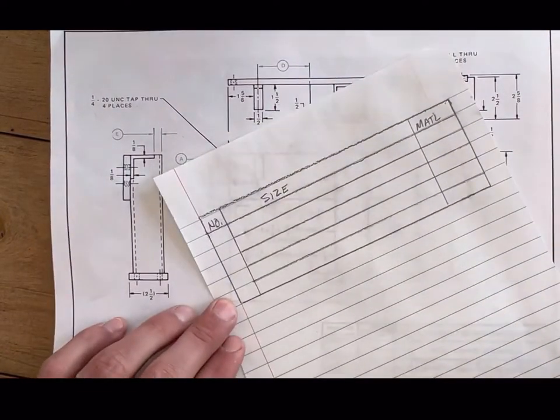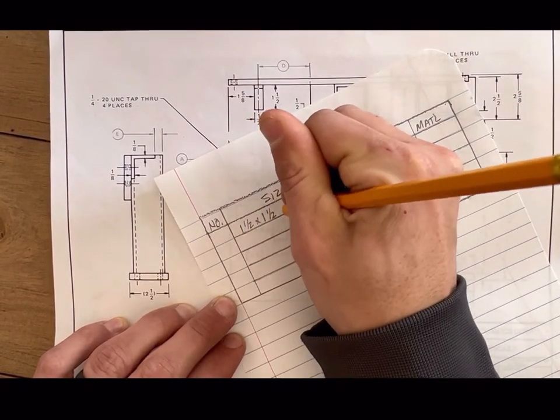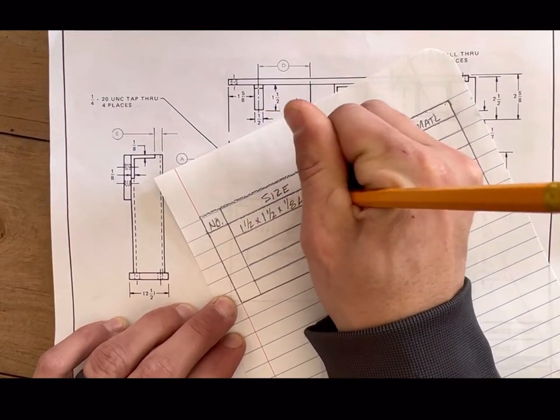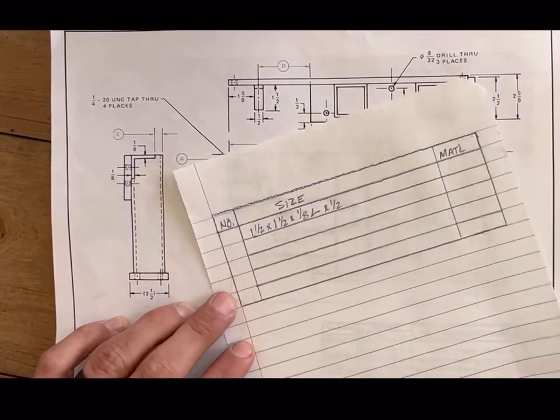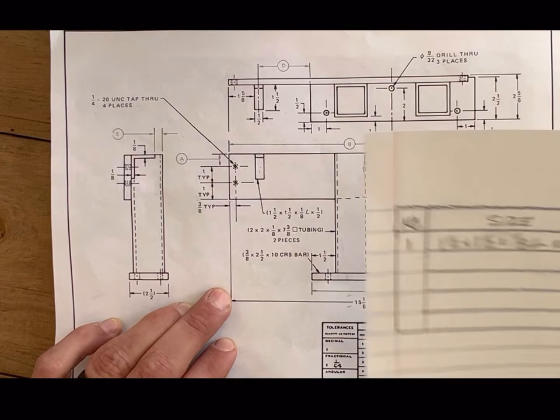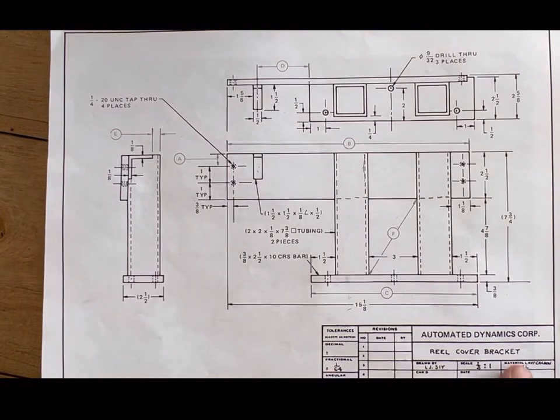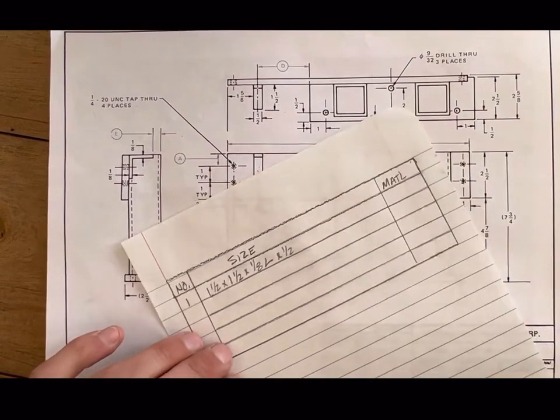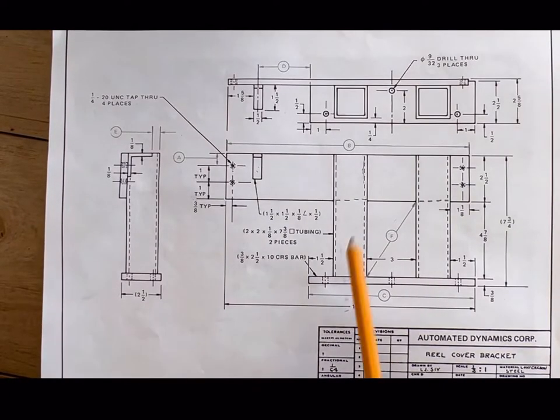They did a good job of pointing all this stuff out. They're not making you search for the answers on this one. It's actually right there in front of you. So it's a one and a half by one and a half by one eighth angle, and we're going to cut that down to one half inch. We'll call that part number one. There are no balloons on this print to identify each piece. It doesn't give us the material, but we can find down here in the bottom right corner that the material is low carbon steel, so I'm going to put LCS here.